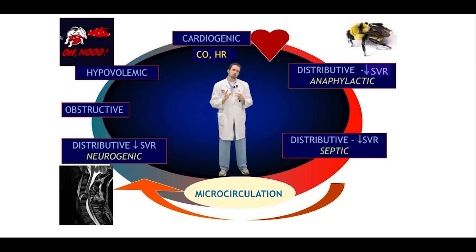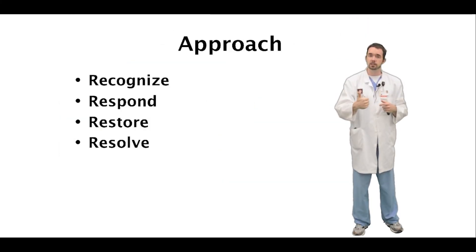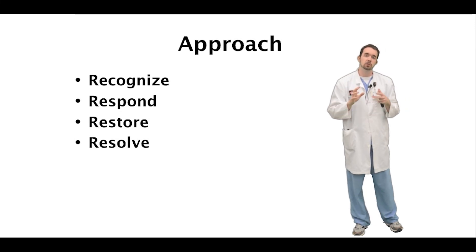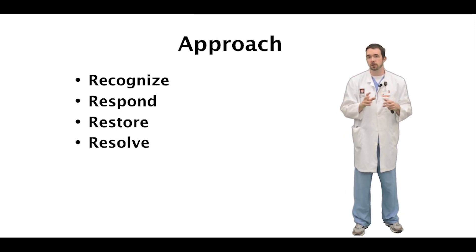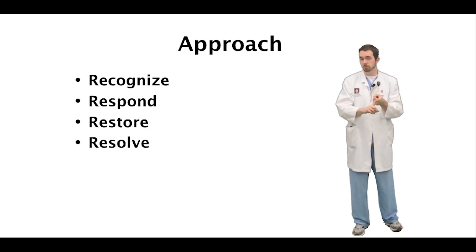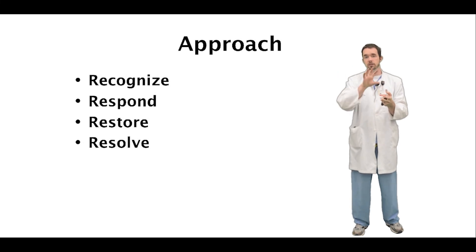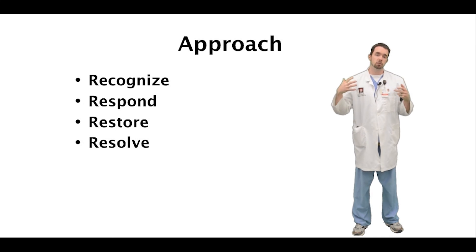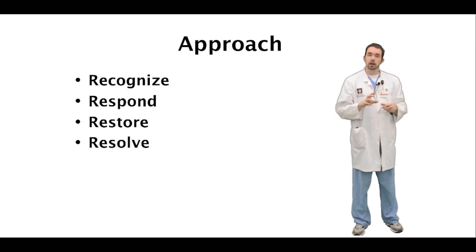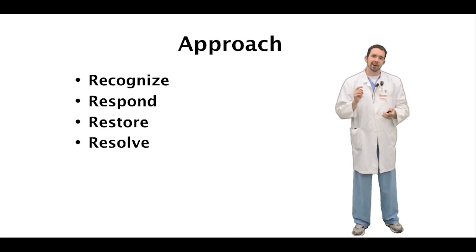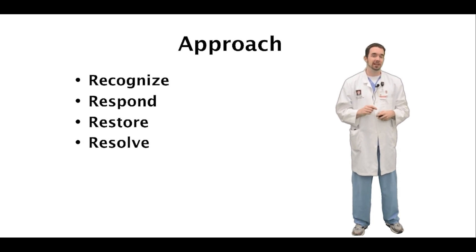To summarize, your approach to the patient in shock goes like this: first, recognize it's a problem by examining the patient and checking the lab parameters we talked about. Next, respond quickly — the more time the patient spends malperfusing, the worse off the organs are going to be. We respond typically first with fluids, then pressors tailored to the type of shock state. Then restore perfusion through pressors, fluids, and other organ-specific interventions. And finally, resolve the shock state. I hope this lecture has prepared you so that you won't be shocked next time you're taking care of a patient in shock.